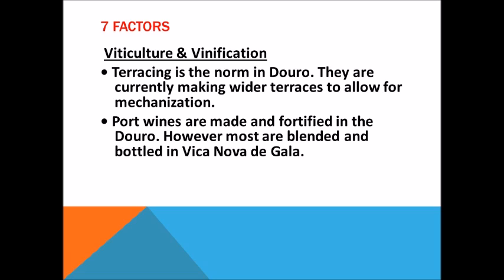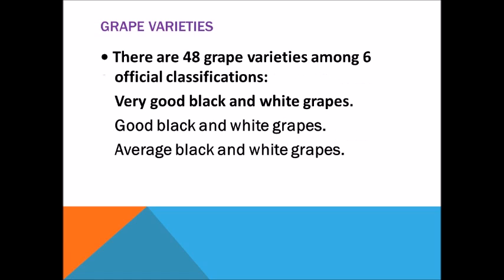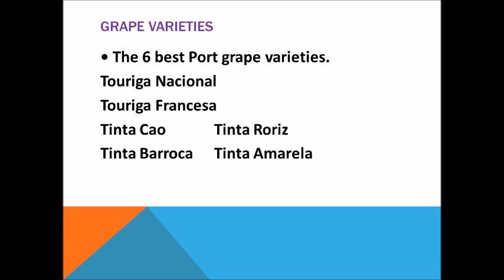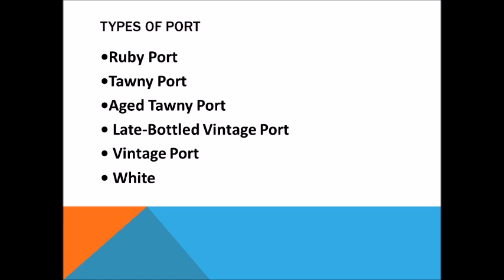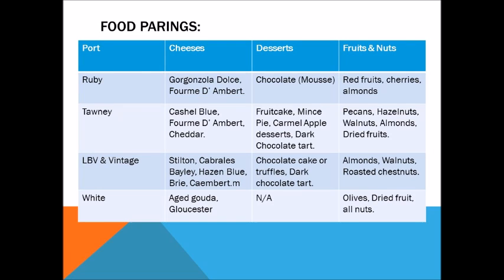Now we move on to the seven factors of Alsace, Rhone Valley, and Loire Valley. What is the location of Alsace? Northeastern France, west bank of the Rhine River, Vosges Mountains to the west. What is the climate of Alsace? Continental. The vineyards are in the lower slopes of the Vosges Mountains with altitude.